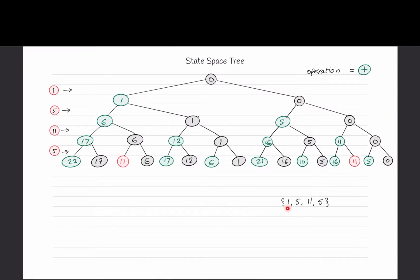This is a complete state space tree for the provided set. The state space tree says that if we pick any one element out of our set, what could be its possible state? In our case, either we add it or we don't. So for number 1, do we want to add it in our solution? The answer is yes or no. If we add it, the next choice is 5.